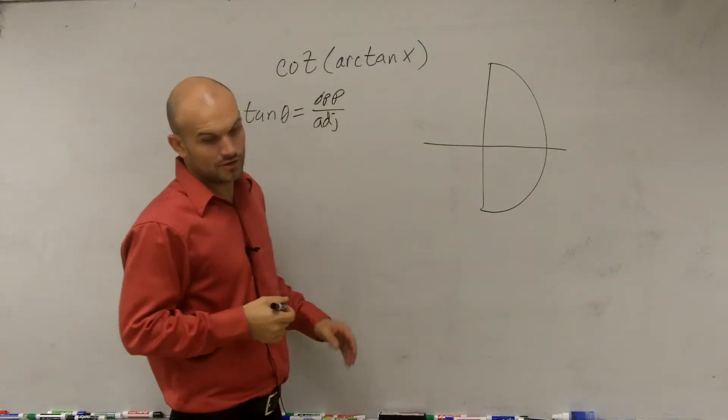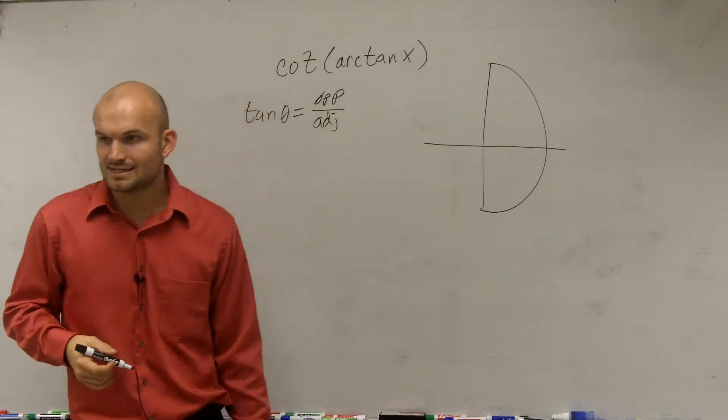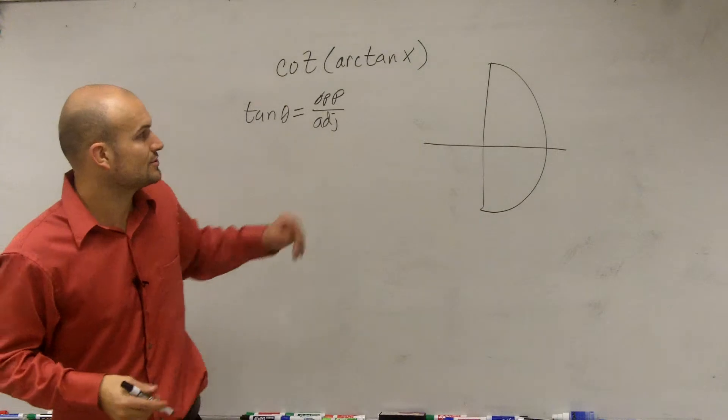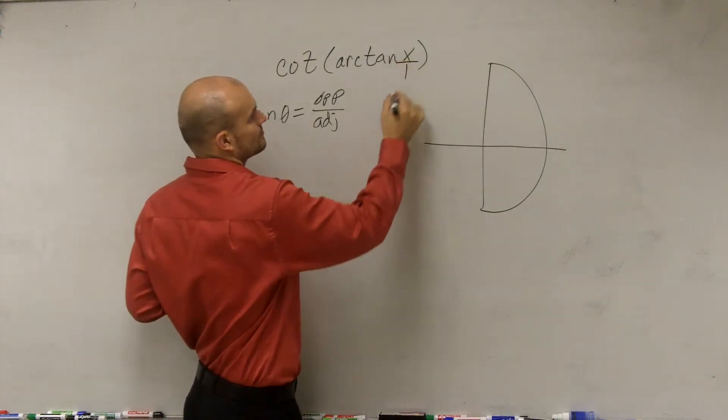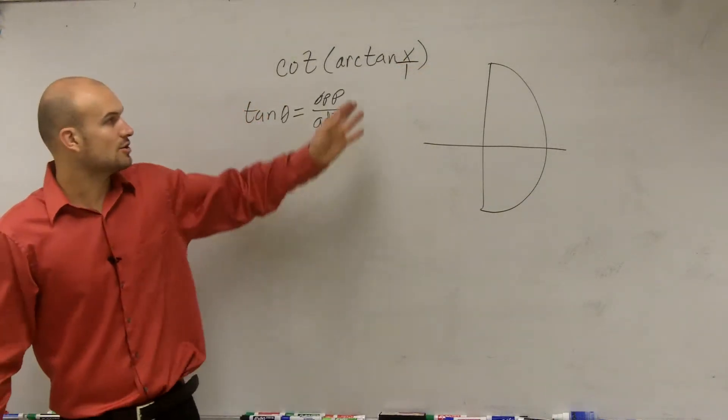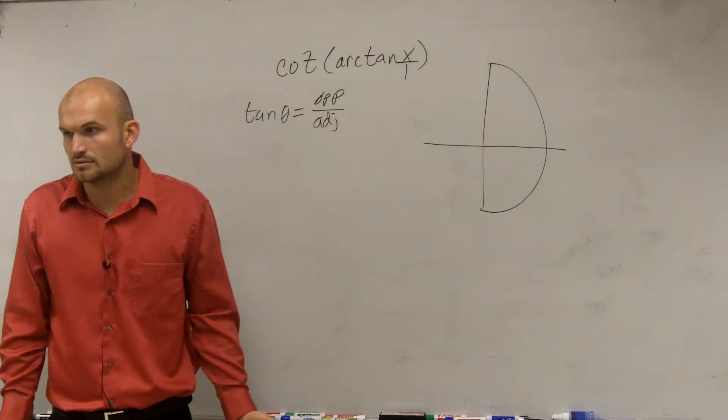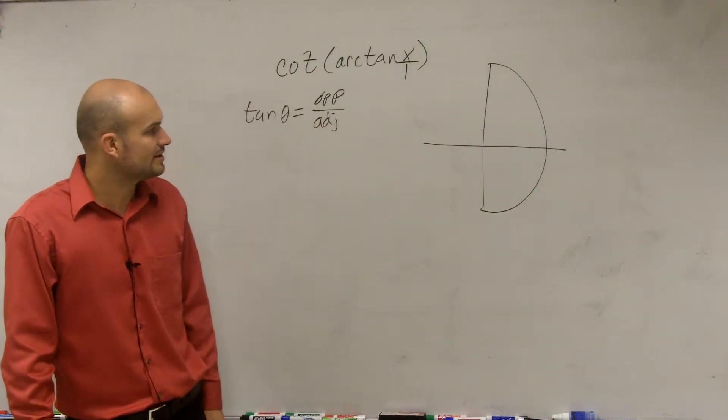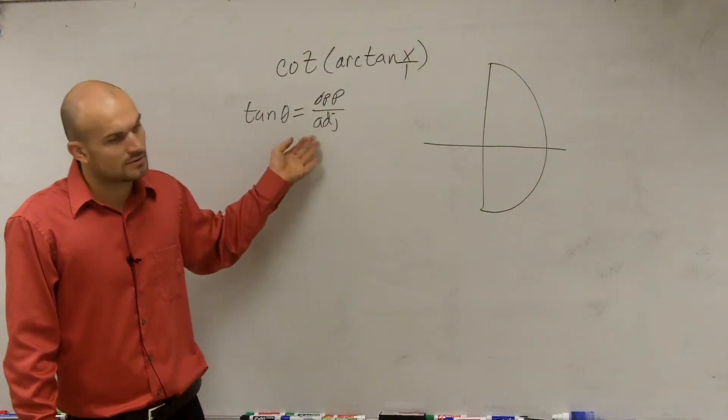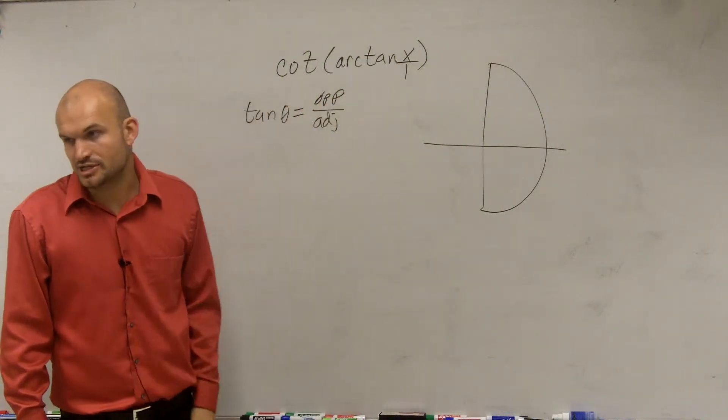So in this problem, the only thing we know is that x is going to equal, it's going to be x over 1. All right? So x is going to be our opposite side, and adjacent is going to be our 1, is going to be our adjacent side. Right?